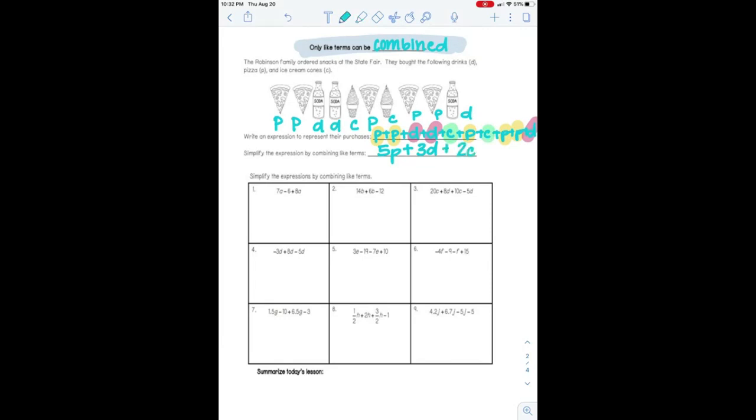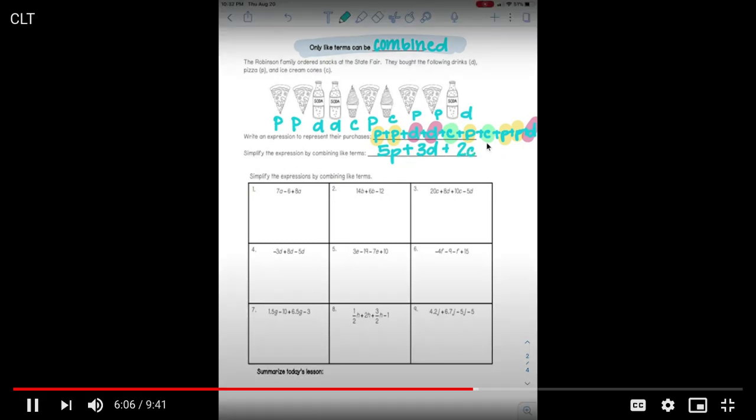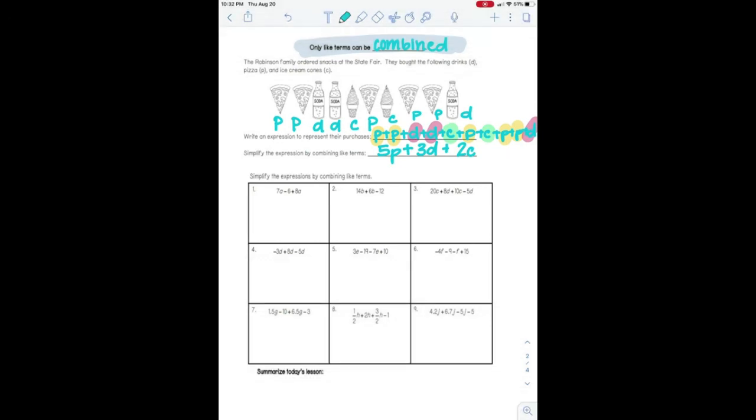So you can see that this down here is way less complicated than this up here. This is easier to write. It's easier to read. It is more user-friendly. And it is simplified. Okay. So the whole point of combining like terms is to simplify your expression. Okay. So if on a quiz you see a question and it says simplify and it gives you an expression, you're going to immediately think, okay, can I combine any like terms? That should be the first thought that you have. Okay.